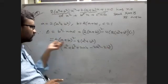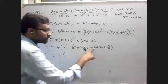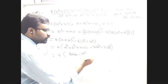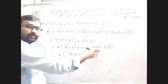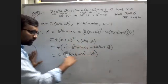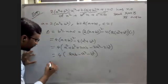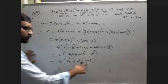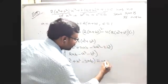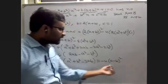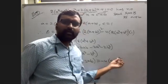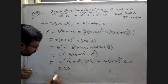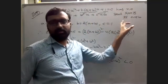Taking minus common: -4[a² + b² - 2ab] = -4(a - b)². Since a and b are constants, (a - b)² is positive, so -4(a - b)² is negative. Therefore Delta < 0, and the equation has no real roots.